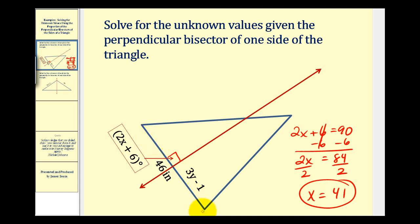Now let's take a look at this side of the triangle. Since this red line is the perpendicular bisector, it cuts this side of the triangle into two congruent segments. So this segment here is congruent to this segment here.